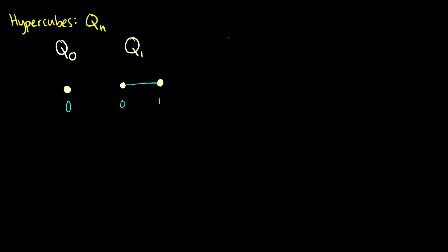For Q2 we follow the same strategy. We have our old vertices labeled zero and one, then we duplicate them, giving the copies the same labels: zero and one. We connect corresponding vertices — zero to zero, one to one. On the original copy we add zeros in front of the string, and on the new copy we add ones. Now we have the binary sequences for one through four.